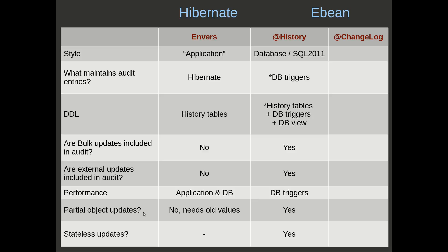In terms of partial updates, if we have a partially populated bean and do an update, then we don't have the old values for the unloaded properties, so those entries can't go into the audit log. Whereas with the database-centric approach, the database triggers have access to all the old values, so those can all go in and we have full logging with partial updates. Similarly, stateless updates — that's all available. There are no stateless updates in Hibernate, so we can leave that one off.